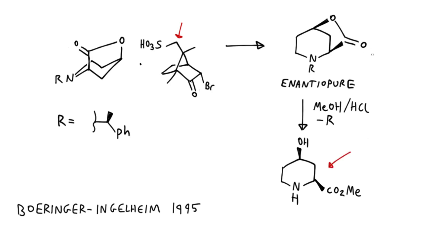Methanolysis with hydrogen chloride converts the lactone into the methyl ester and the free hydroxy group, and reductive removal of the alpha-methylbenzyl group with palladium on carbon and hydrogen affords the piperidine building block.